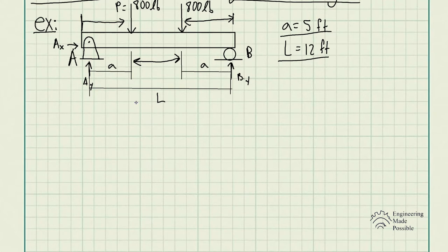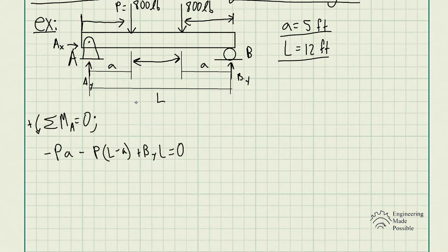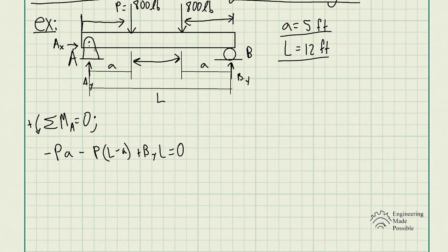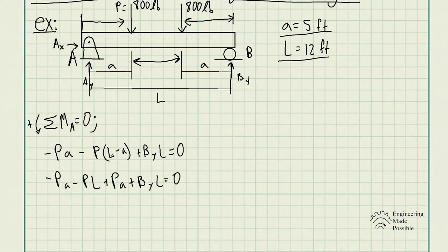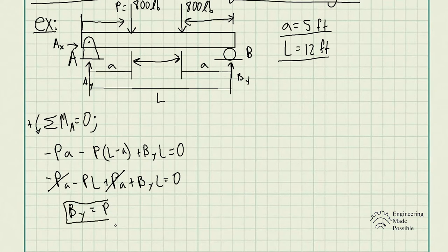Before we split it into sections, let's solve for the reaction forces first. Taking the sum of moments with respect to A equal to zero: we have negative P times A (clockwise), then the other external force P times the distance (L minus A), and then B_Y times L equals zero. Distributing, negative PA and positive PA cancel out, so B_Y equals P.